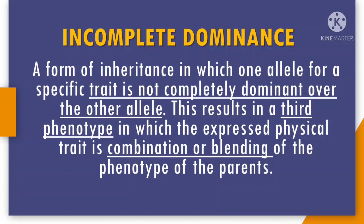But before that, let us define what incomplete dominance is. Incomplete dominance is a form of inheritance in which one allele for a specific trait is not completely dominant over the other allele. This results in a third phenotype in which the expressed physical trait is a combination or blending of the phenotype of the parents. In short, incomplete dominance produces a third phenotype from the combination of the phenotypes or traits of the parents.